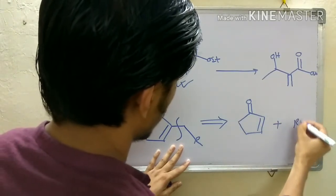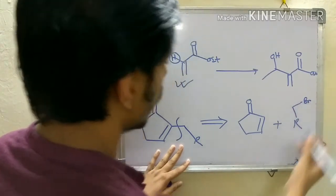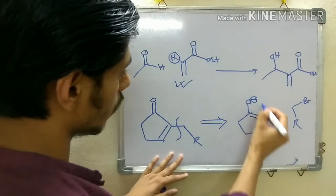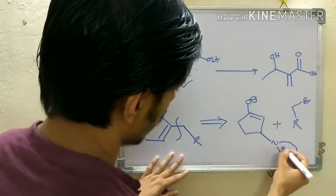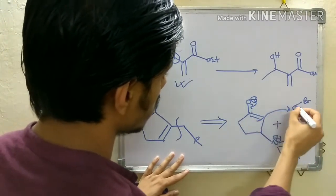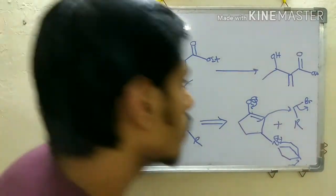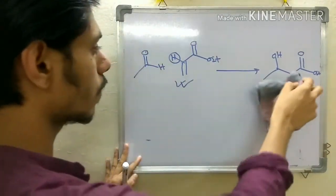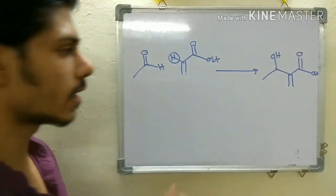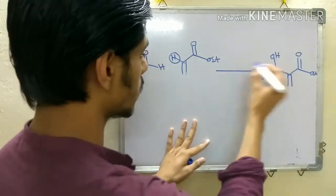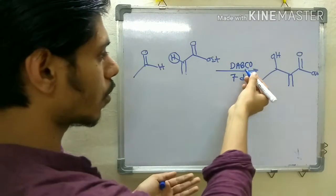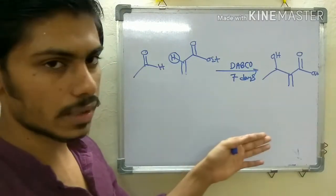In the retrosynthetic approach: DABCO first attacks the acrylate to generate an enolate equivalent, which then attacks the electrophile to give the Baylis-Hillman product. The only drawback of this reaction is that it takes a very long time — for this particular example, around seven days. However, it is a very simple reaction and DABCO is a true catalyst because it is recovered in the final E1CB elimination step.